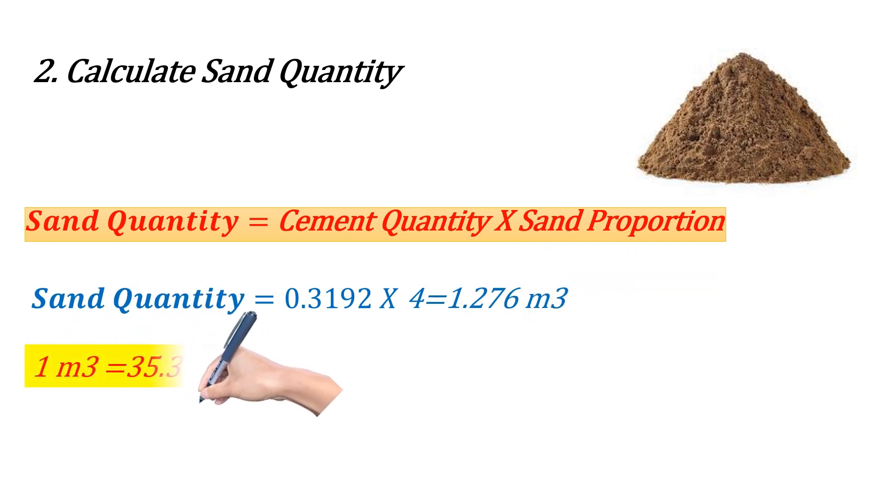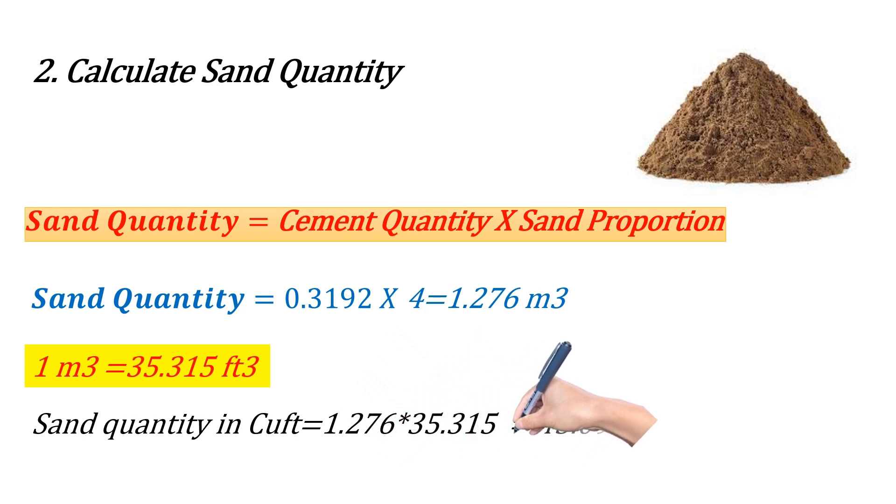As we know that 1 m³ equals 35.315 cubic feet, by multiplying 1.276 with 35.315, we get 45.09 cubic feet.